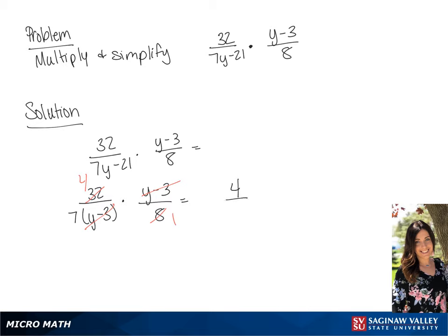And 32 and 8 will simplify to 4 over 1. So our final answer is going to be 4 over 7.